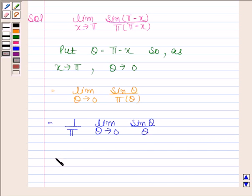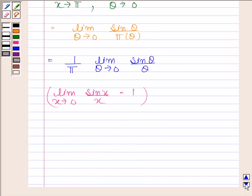We know that the limit of sin(θ)/θ as θ tends to 0 is 1. So we have 1/π times 1, which equals 1/π.